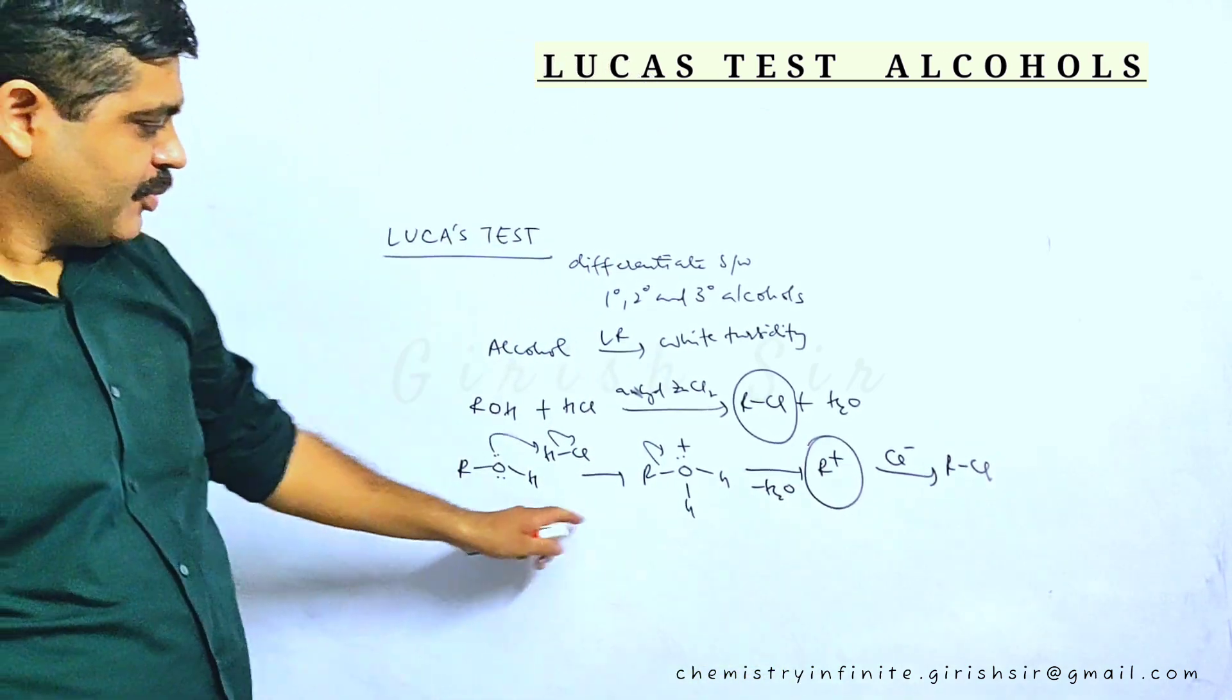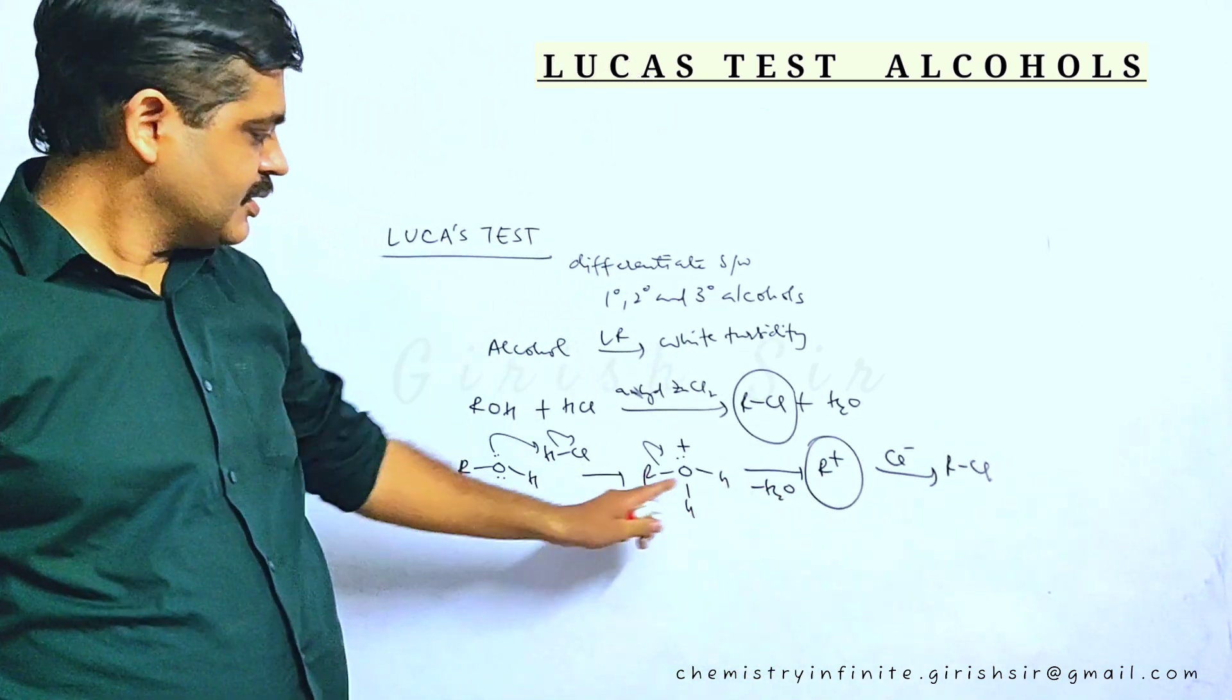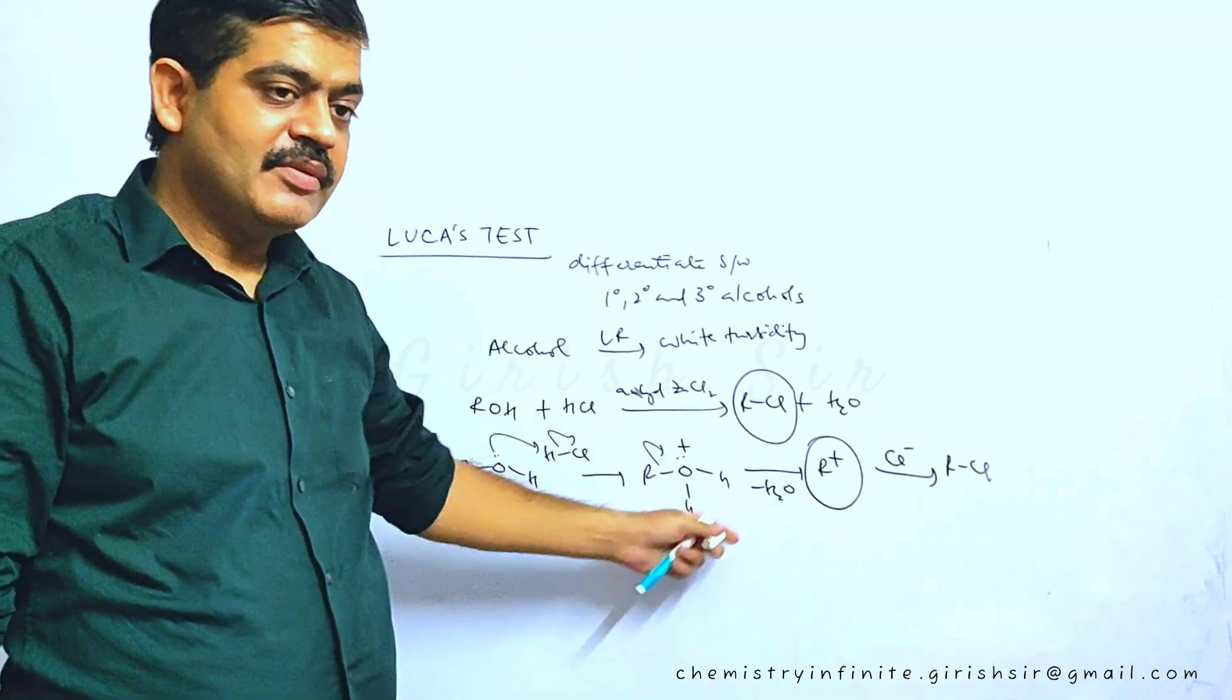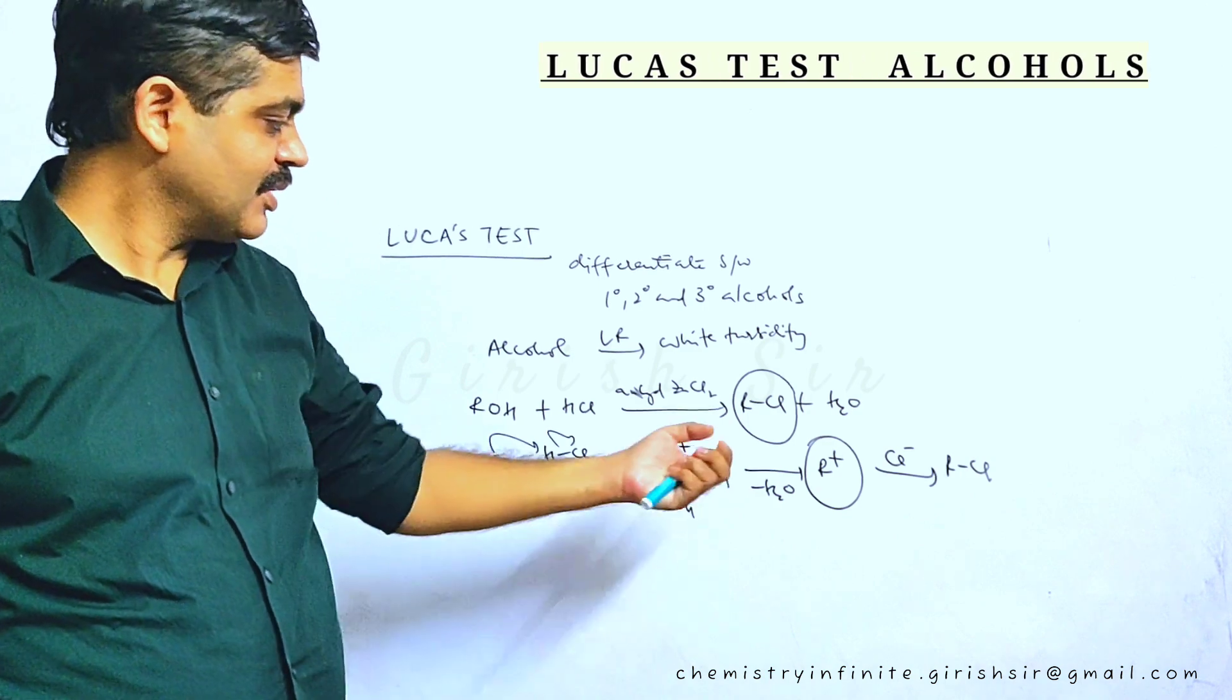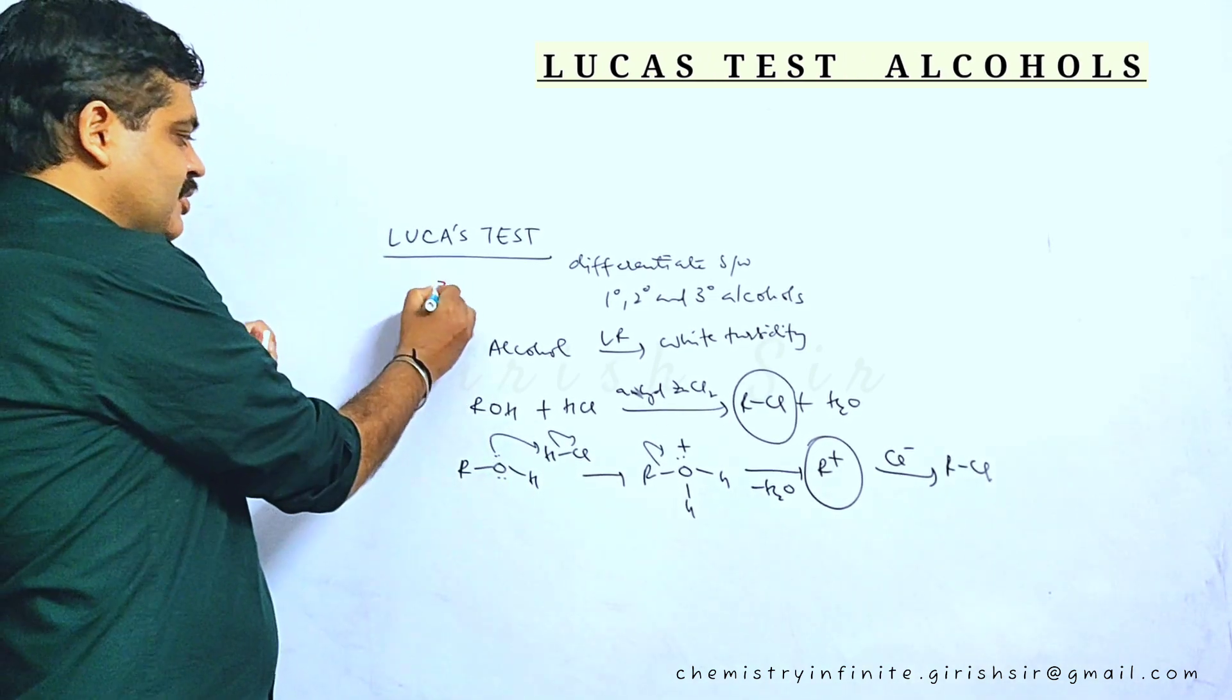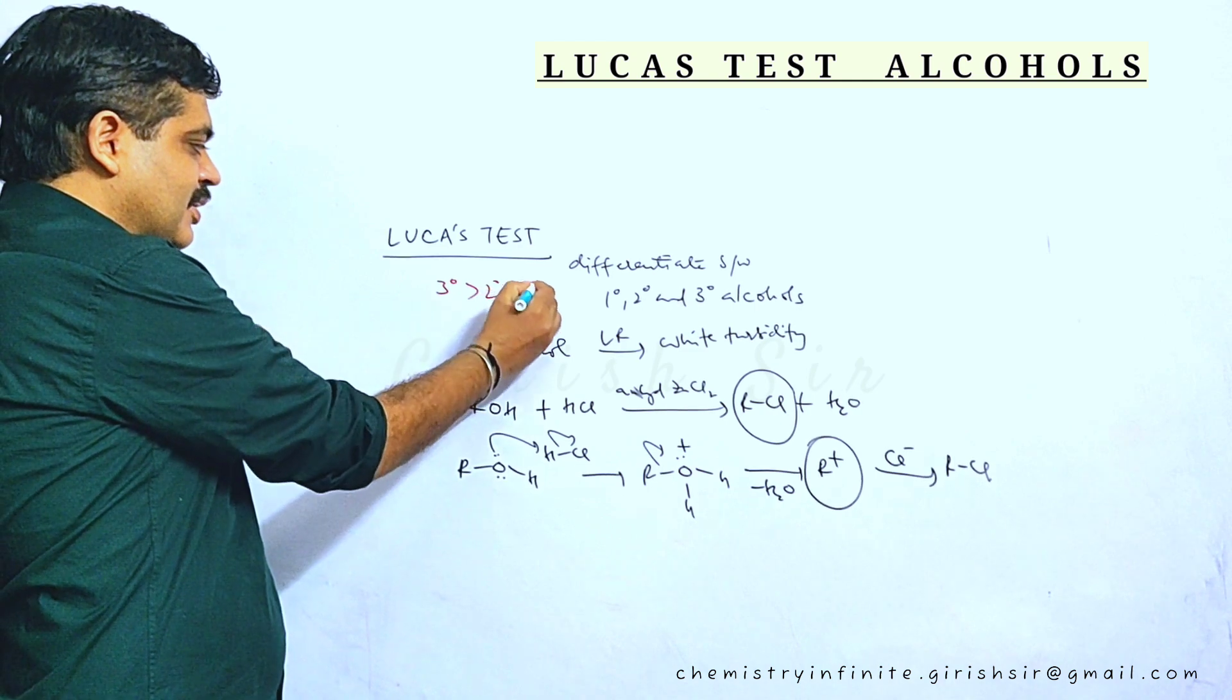This part is important to understand. This reaction occurs via formation of a carbocation intermediate. So speed of the reaction or rate of the reaction will depend on stability of carbocation. Because 3 degree carbocation is more stable than 2 than 1 degree.